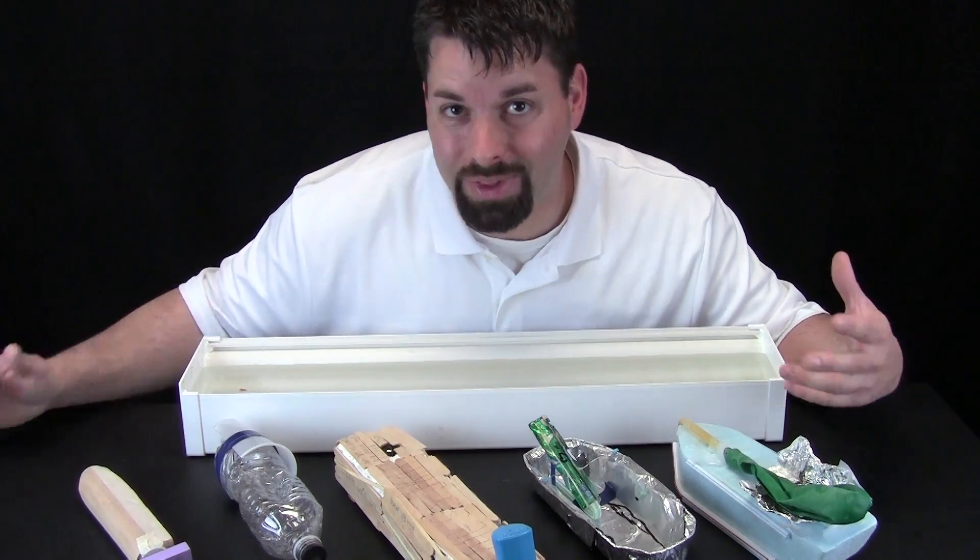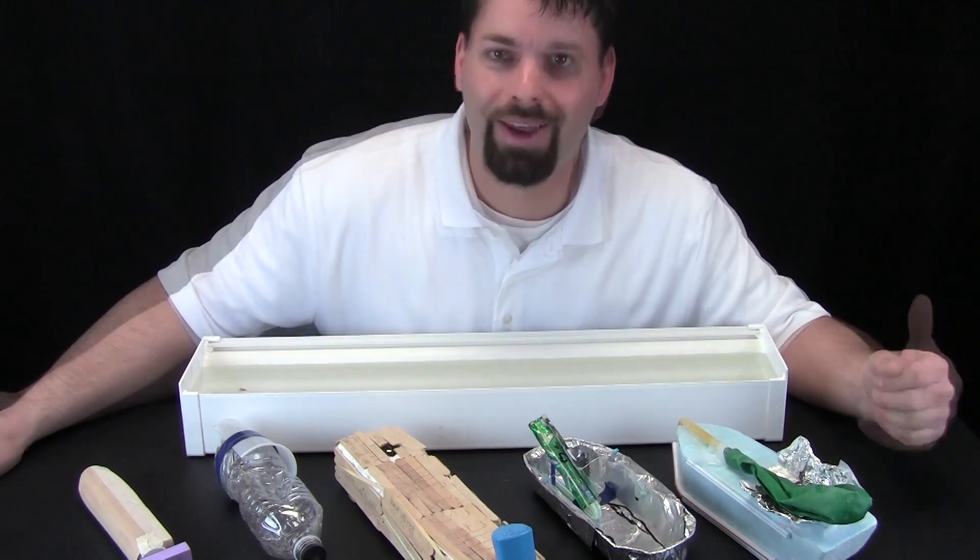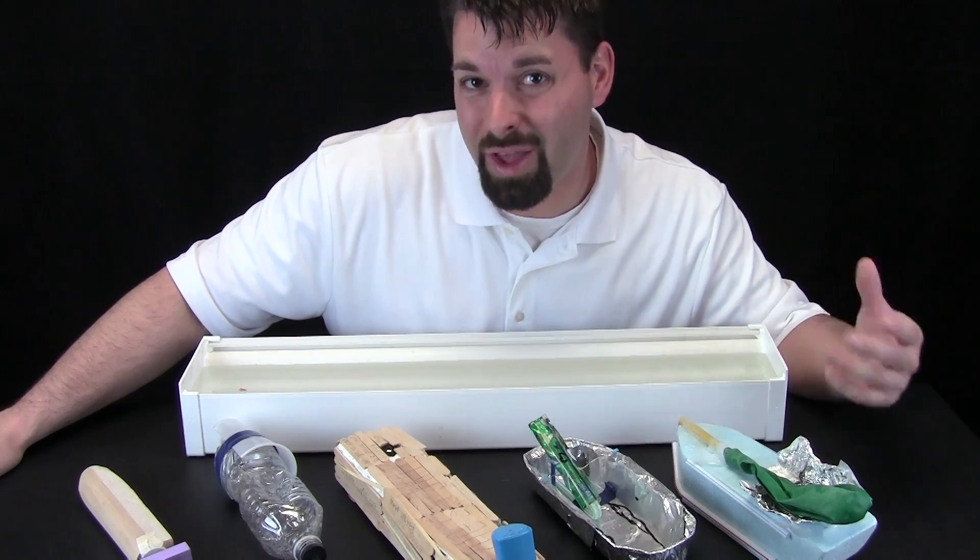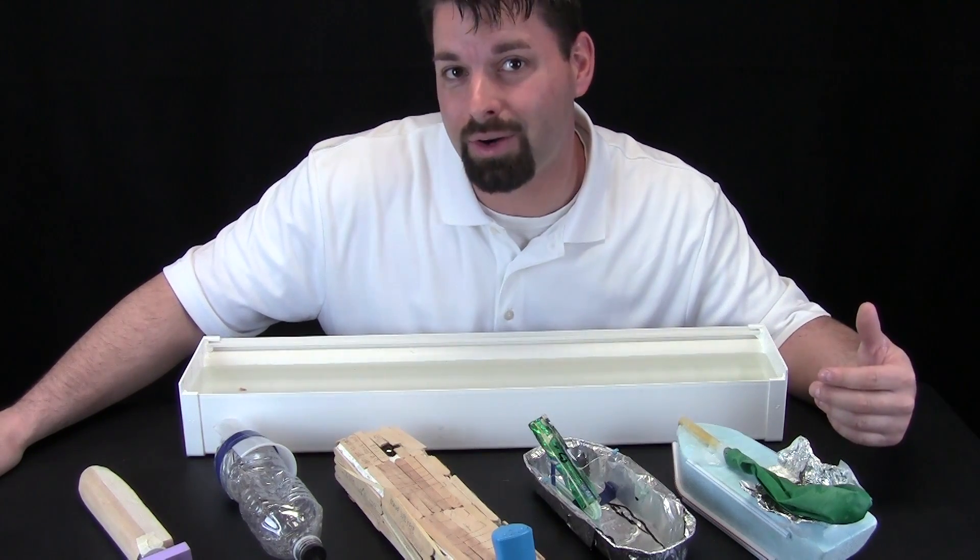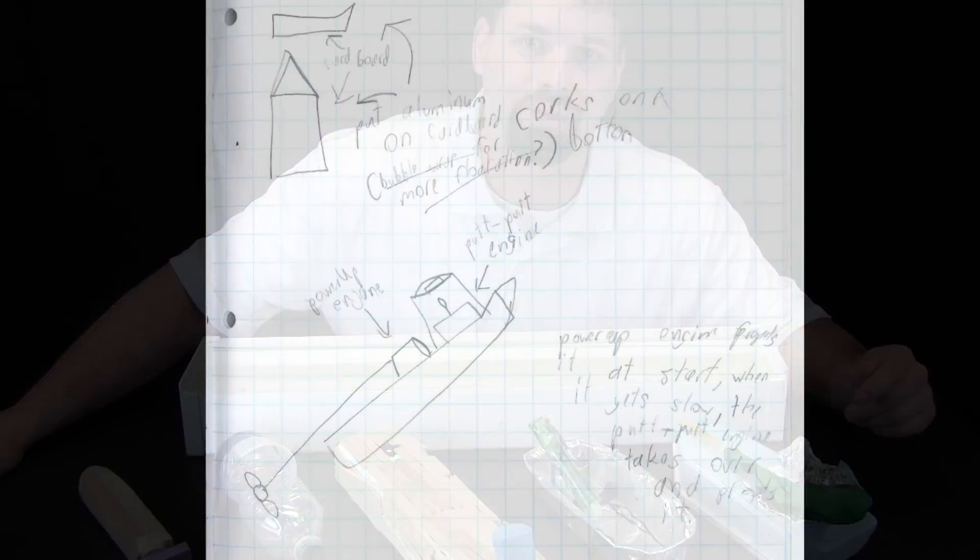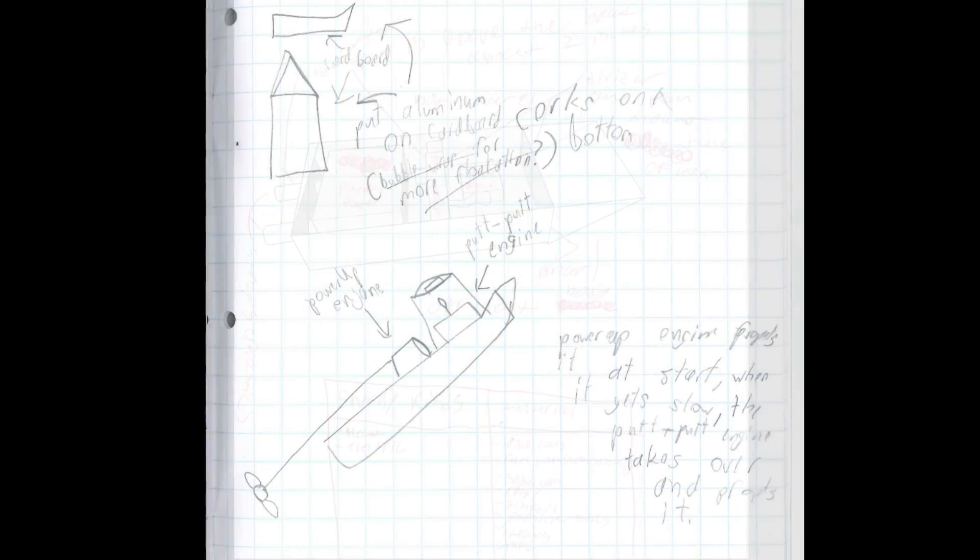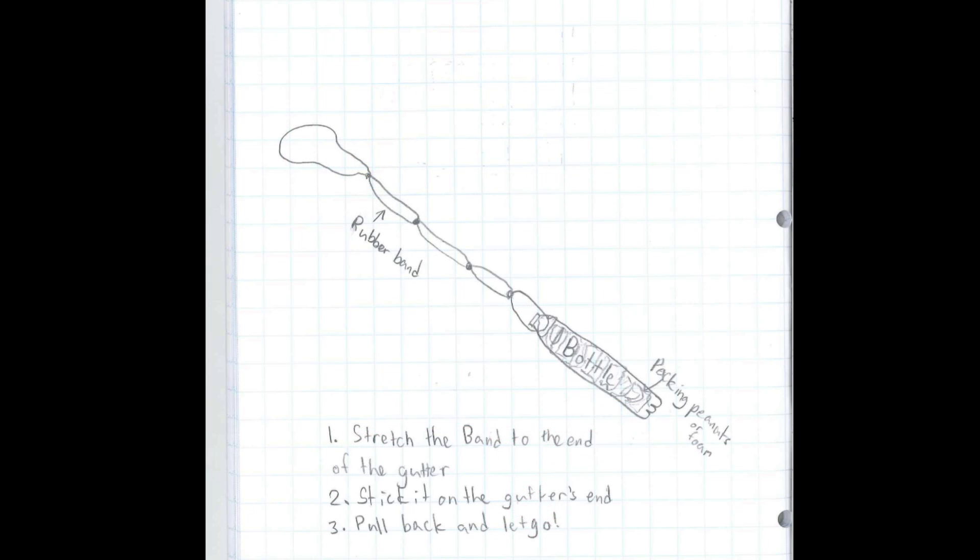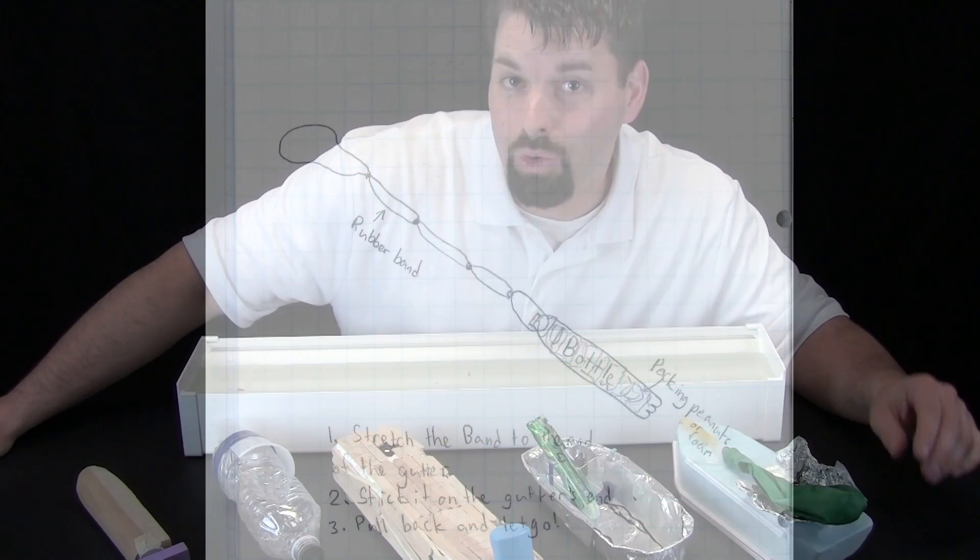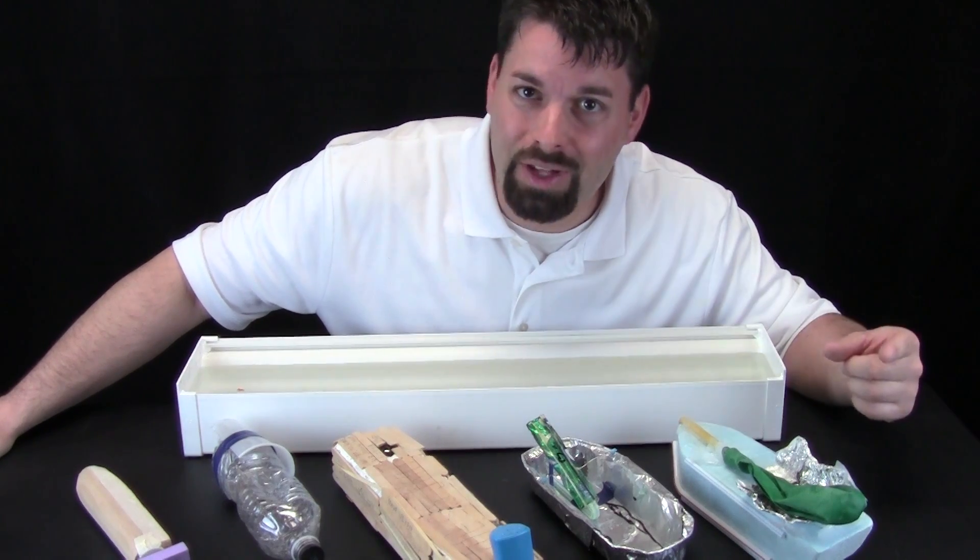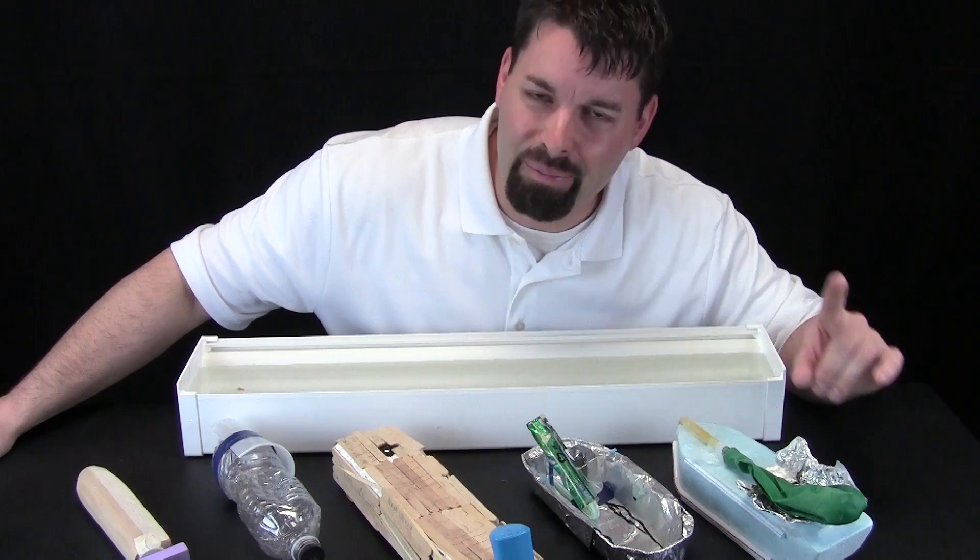So where do we start with this design challenge? I like to start by having my students draw a picture of a boat they think will float and move through the water. Anywhere from two to five pictures is a really good starting point. Students can work by themselves or they can work in a group. But the next step is to pick one picture and build that boat.